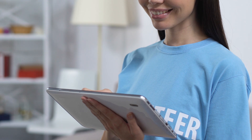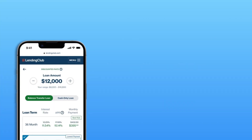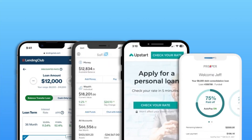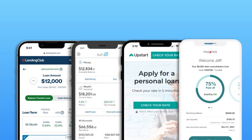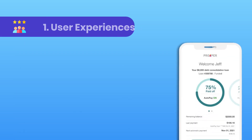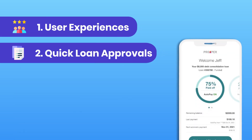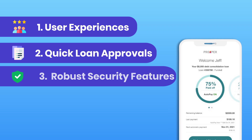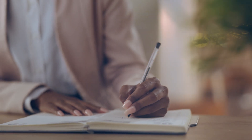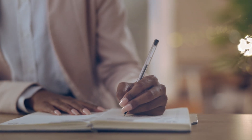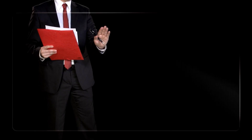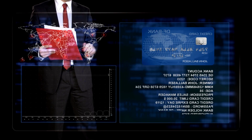First, let's take a look at some of the popular personal loan apps out there. Apps like Lending Club, SoFi, Upstart and Prosper have set high standards in the market. These loan apps offer seamless user experiences, quick loan approvals and robust security features. When you are creating your micro loan app, aim to match or exceed these standards to compete effectively in the personal finance app market.